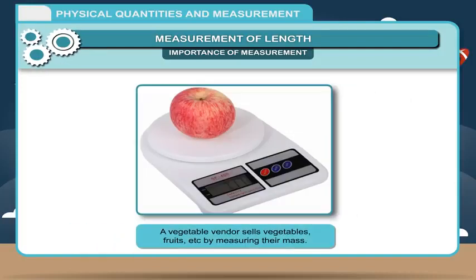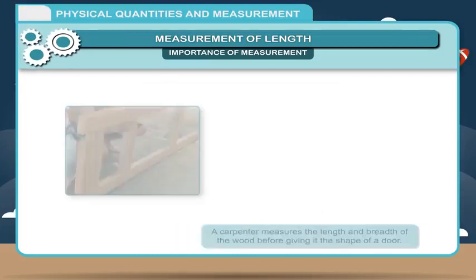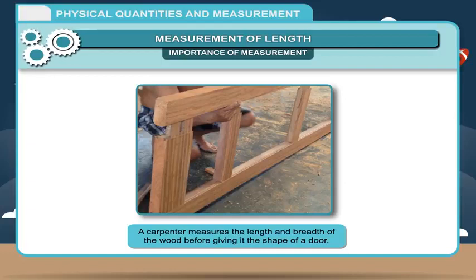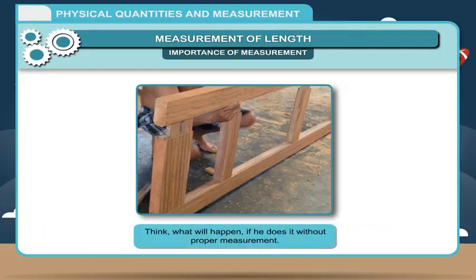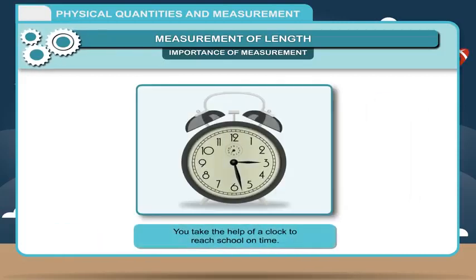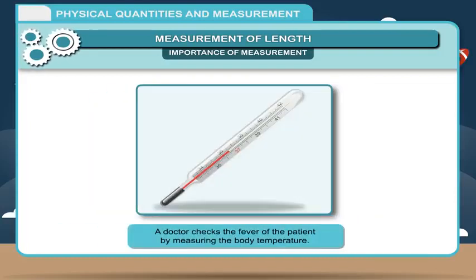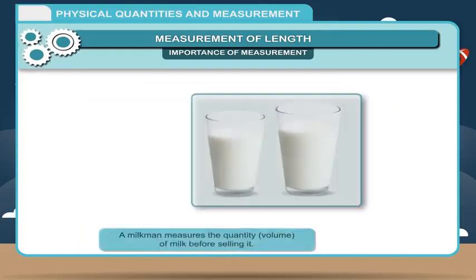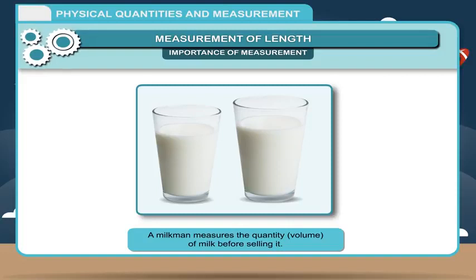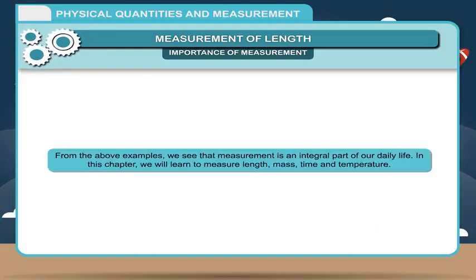Some other examples: One — a vegetable vendor sells vegetables, fruits, etc. by measuring their mass. Two — a carpenter measures the length and breadth of wood before giving it the shape of a door. Think: what will happen if he does it without proper measurement? Three — you take the help of a clock to reach school on time. Four — a doctor checks the fever of a patient by measuring body temperature. Five — a milkman measures the quantity and volume of milk before selling it. From these examples, we see that measurement is an integral part of our daily life. In this chapter, we will learn to measure length, mass, time, and temperature.